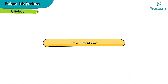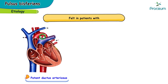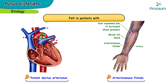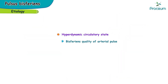Pulsus bisferiens is occasionally felt in patients with a large patent ductus arteriosus or in patients with arteriovenous fistulae. A bisferiens quality of the arterial pulse is also rarely noted in patients with significant mitral valve prolapse and very rarely in normal individuals, particularly when there are hyperdynamic circulatory states.